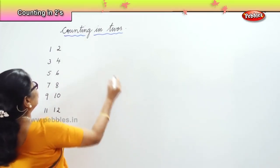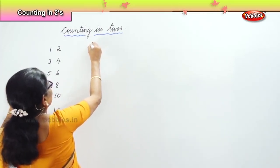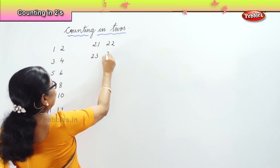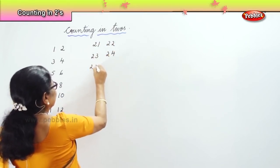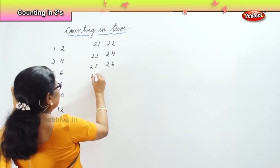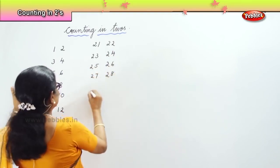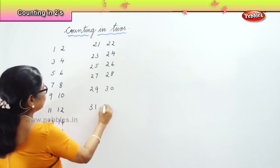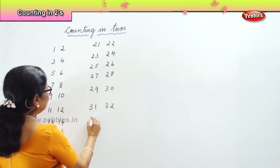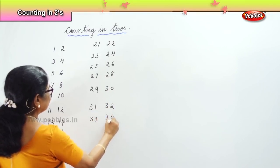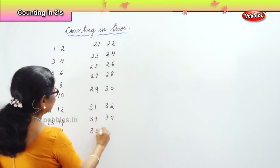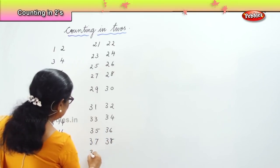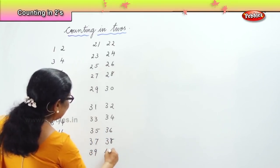And we go on. I'll show you the magic in it. Twenty-one, twenty-two, twenty-three, twenty-four, twenty-five, twenty-six, twenty-seven, twenty-eight, twenty-nine, thirty. Then thirty-one, thirty-two, thirty-three, thirty-four, thirty-five, thirty-six, thirty-seven, thirty-eight, thirty-nine, forty. And we go on.